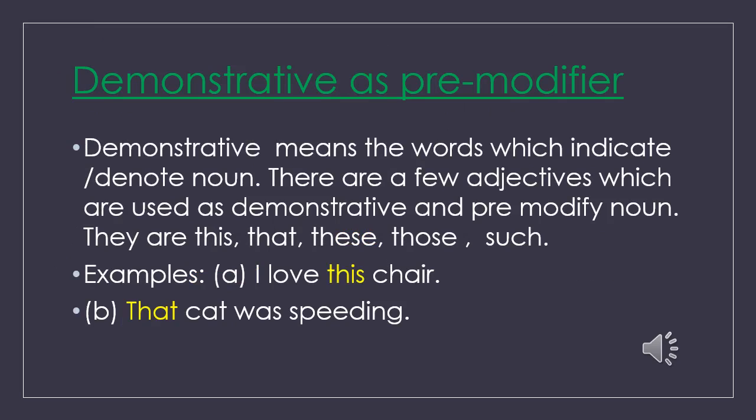Now we will see demonstrative as premodifier. Demonstrative means words which indicate or denote nouns. There are a few adjectives which are used as demonstratives and premodify nouns. They are: this, that, those, these, such, etc. Example A: 'I like this chair.' Example B: 'That cat was speeding.' Here, 'this' and 'that,' as demonstratives, are used as premodifiers of 'chair' and 'cat.'